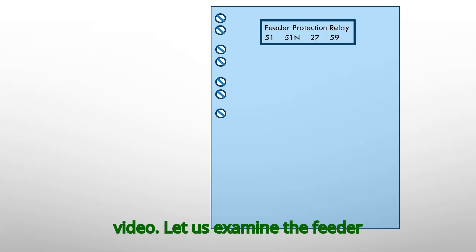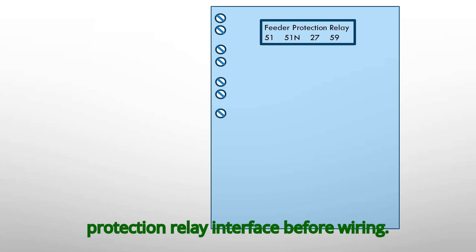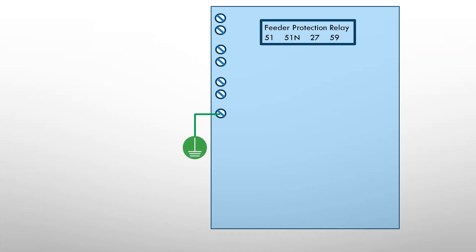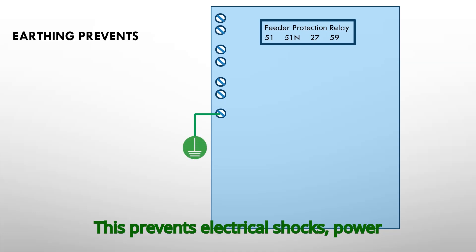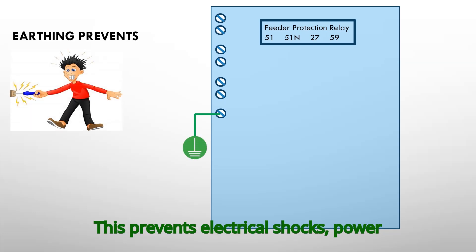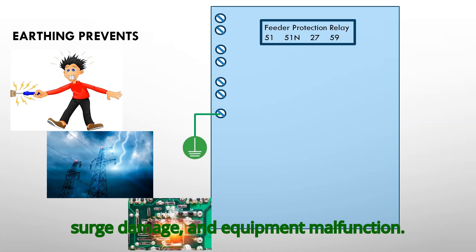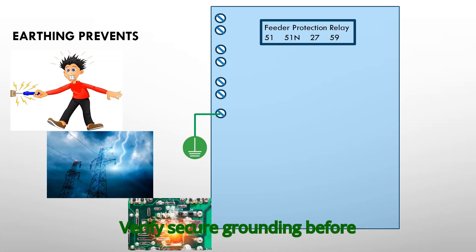Let us examine the feeder protection relay interface. Before wiring, ensure safety by grounding the relay. This prevents electrical shocks, power surge damage and equipment malfunction. Verify secure grounding before proceeding.